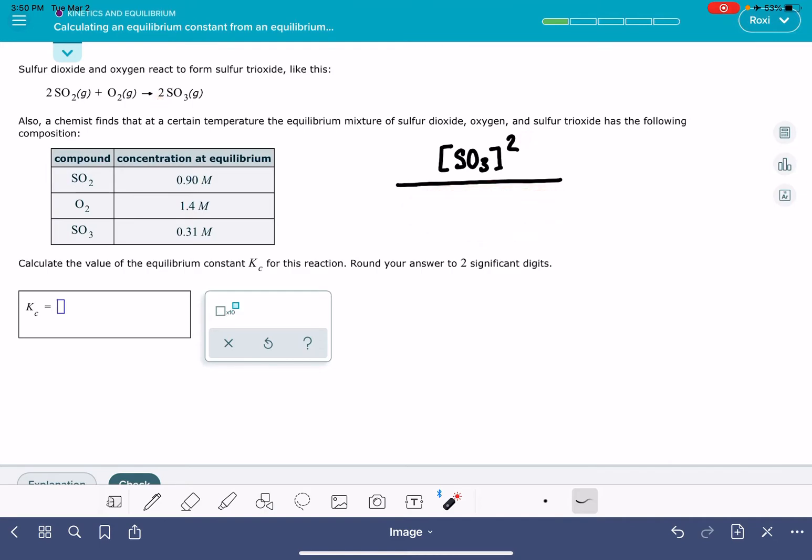On the bottom of this, we enter information for our reactants. Our reactants are SO2 and O2. The stoichiometric coefficient for SO2 is 2, so that will be raised to the power of 2. And then we also have the O2 molecule.